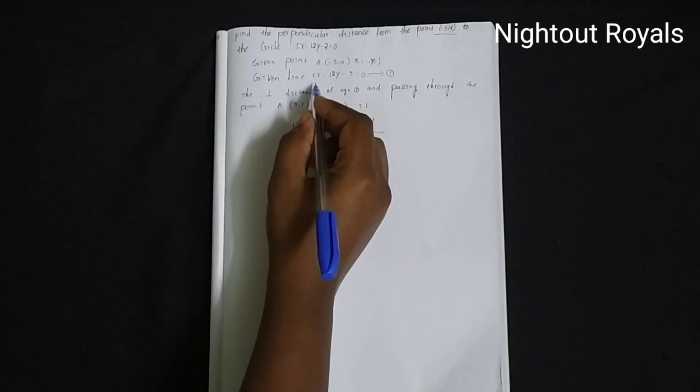d equal to: a1 is 5, x is minus 3, plus b is minus 12, y is equal to 4, c is equal to minus 2.